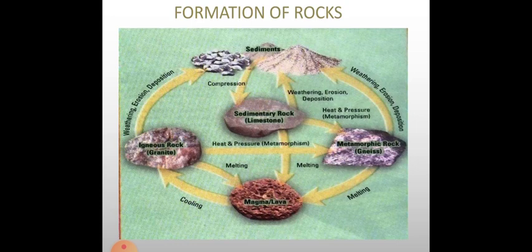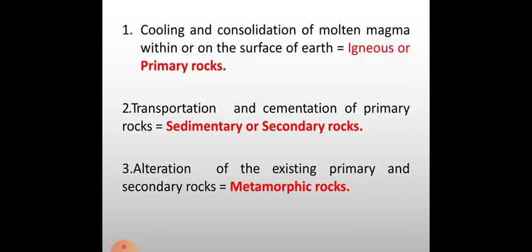In this figure we will discuss the process of formation of rocks. The magma, also called lava, from the earth's crust erupts out from volcanic eruption forming igneous rocks, also called granite. Igneous rocks are formed as the magma cools. Weathering, erosion and deposition converts igneous rocks into sediments. On compression of the sediments, sedimentary rocks are formed. During the process of metamorphism, metamorphic rocks are formed — metamorphism takes place under very high heat and pressure. Hence, cooling and consolidation of molten magma within or on the surface of the earth gives igneous or primary rocks.